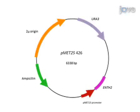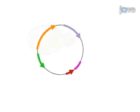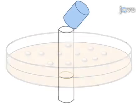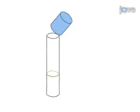This protocol utilizes a regulatable promoter that allows controlled protein expression. In this experiment, we use a high-copy 2 micron plasmid that expresses the nth2 domain from a methionine-repressible promoter. Wild-type yeast cells are transformed with this plasmid, and transformants are selected on plates lacking uracil. After overnight growth in selective media,